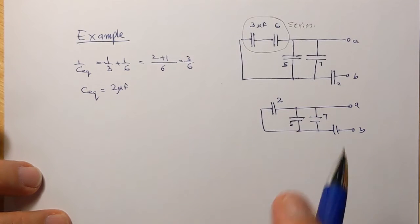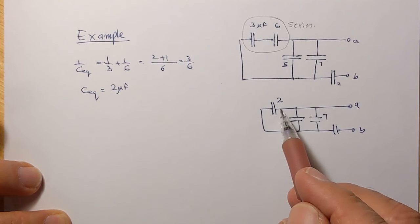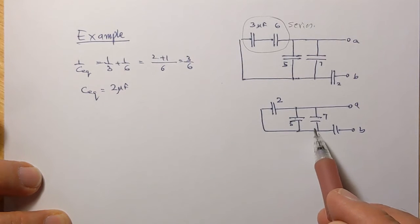So now we look at these capacitors and see what is in series and parallel. So these two, the left sides are connected, the top sides are connected together, but this side is also connected to it, and the other side is connected here. So all three of these are in parallel.